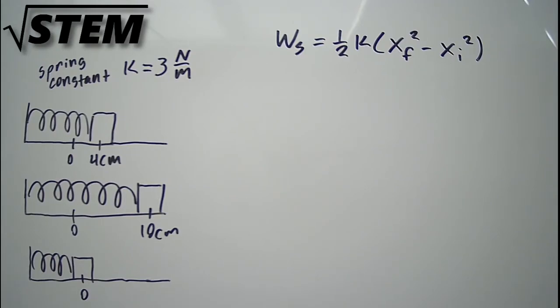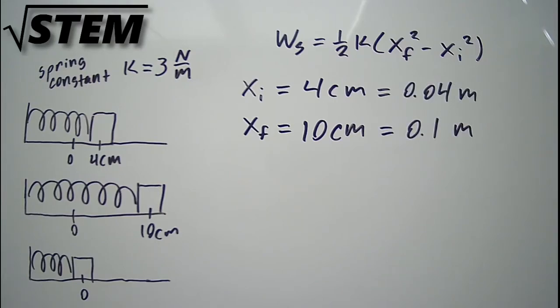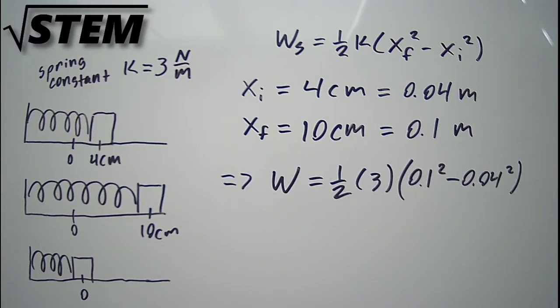To find the work as the block goes from 4 centimeters to 10 centimeters, we should start by converting our centimeters into meters to make sure that our units work out. That gives us an initial x position of 0.04 meters and a final x position of 0.1 meters. Then, the work done as it moves from 4 to 10 centimeters is one half times the spring constant of 3 times the final x position squared minus the initial x position squared, and that comes out to 0.0126 joules of energy.